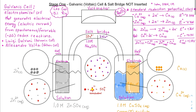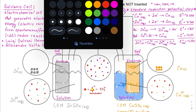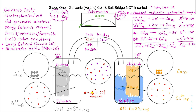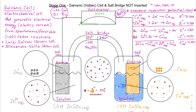Because the salt bridge is not inserted, there is no complete circuit, and the voltmeter reads zero — 0.0 volts. Even though I've built my galvanic cell using copper and zinc as my two half reactions, without the salt bridge there is no voltage.